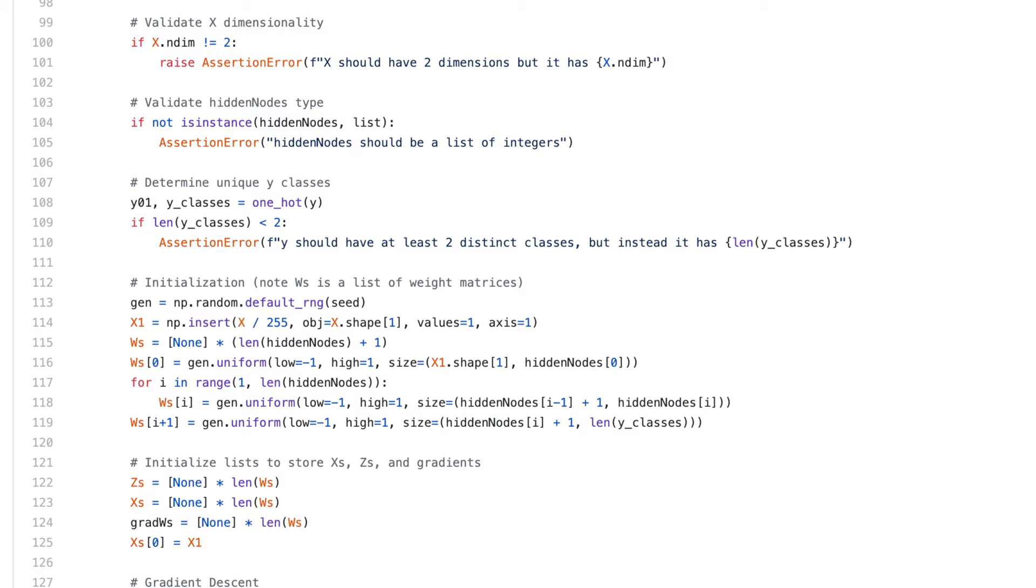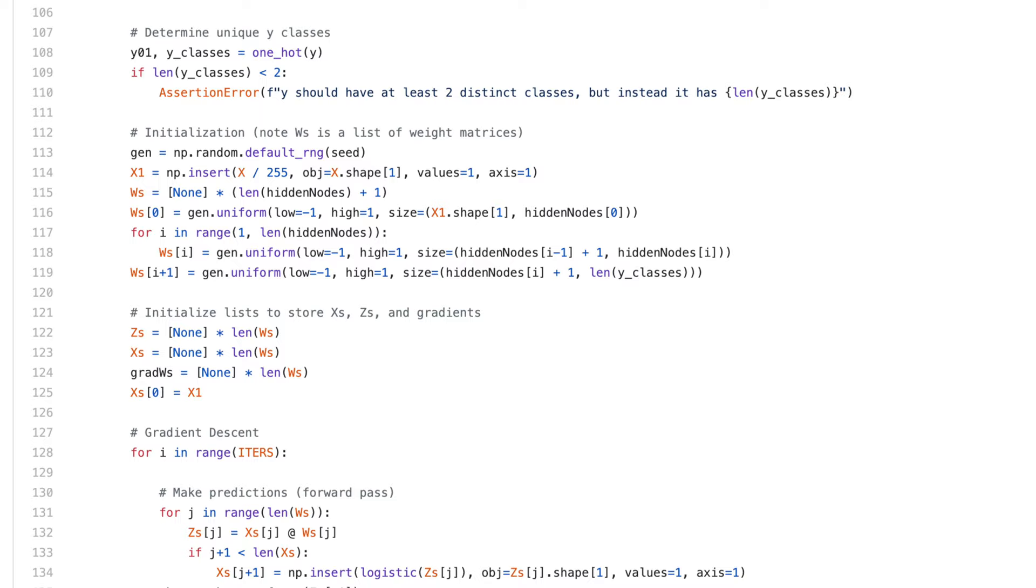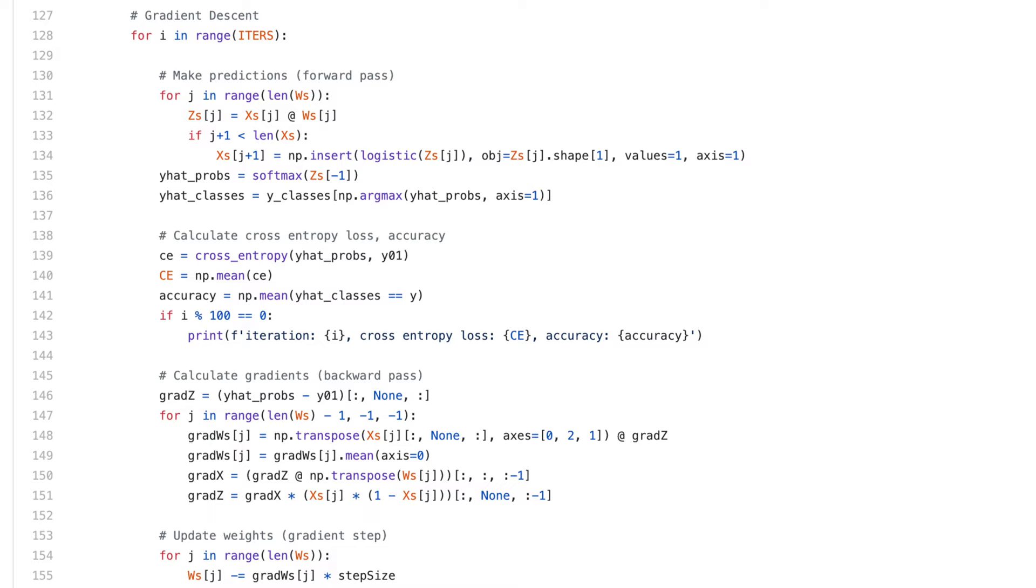I also initialize empty lists to store the Z matrices, X matrices, and grad W matrices. Inside my gradient descent loop, you can see I've implemented the forward pass using a loop with an indexer, J, that iterates over each layer of the network.